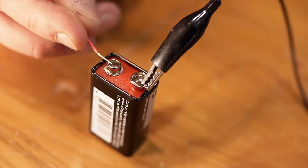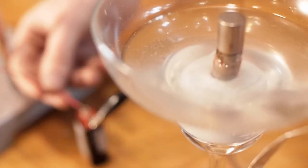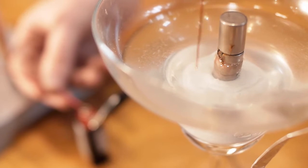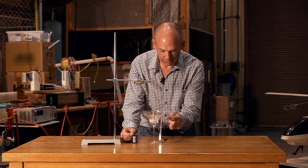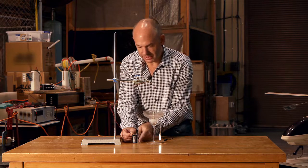So when I complete the circuit by connecting up the battery, we have a current flowing down the wire into the salt solution, out through the aluminium foil and back to the other side of the battery.